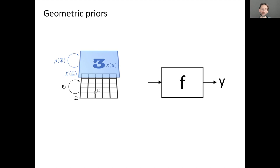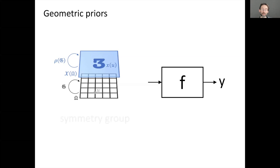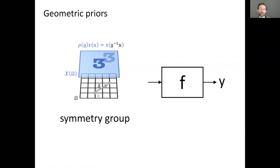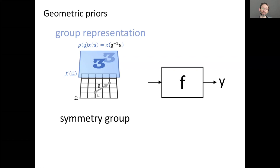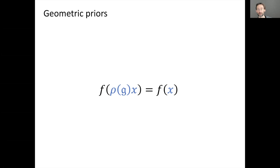Applying a group element to the grid manifests as a change in the image through what's called the group representation, denoted rho. For translations, this is the shift operator — it shifts the image by a vector corresponding to the group element g. We can then define functions that transform differently under the group action: invariance means applying the group action then the function gives the same result as applying the function to the untransformed input.